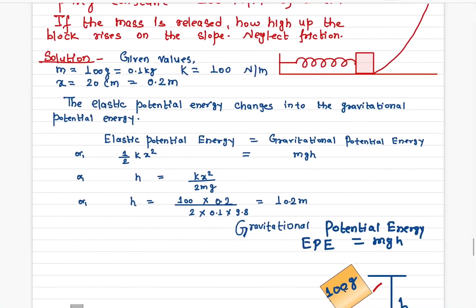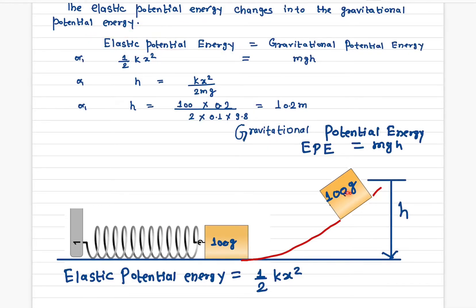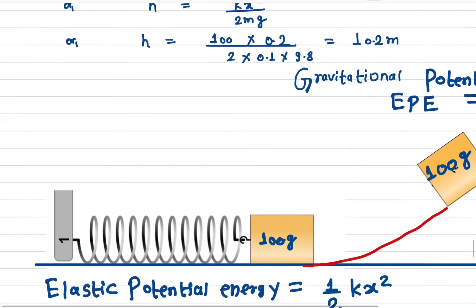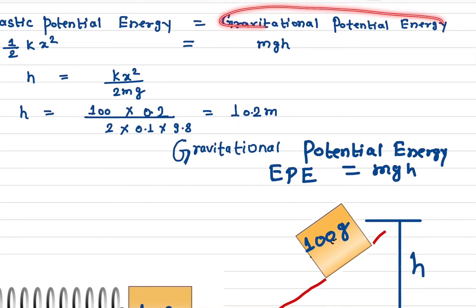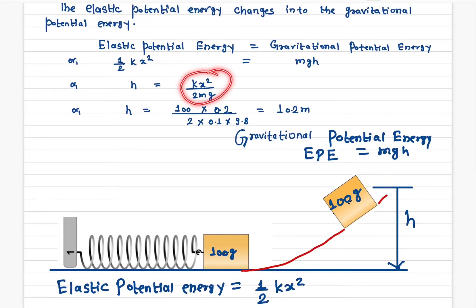Now let's solve the problem. When the spring was compressed, it has only elastic potential energy. When it reaches maximum height, it has only gravitational potential energy. The formula for elastic potential energy is ½kx², where k is the spring constant and x is the compression in the spring. Gravitational potential energy is mgh. Setting them equal and solving for H gives: H = kx² / (2mG).